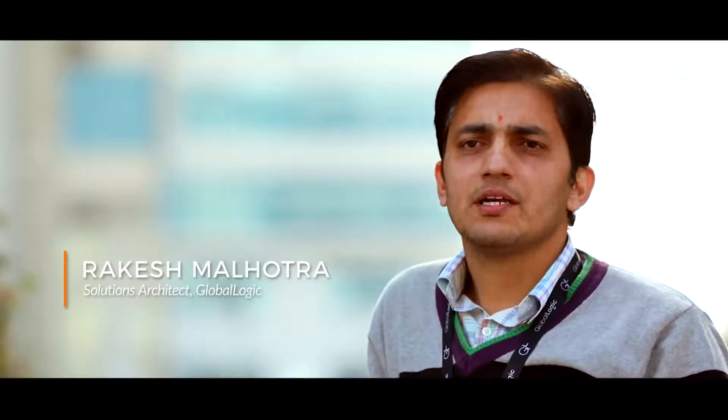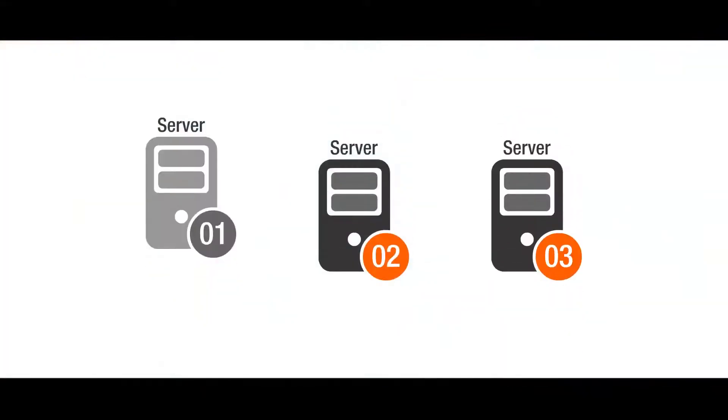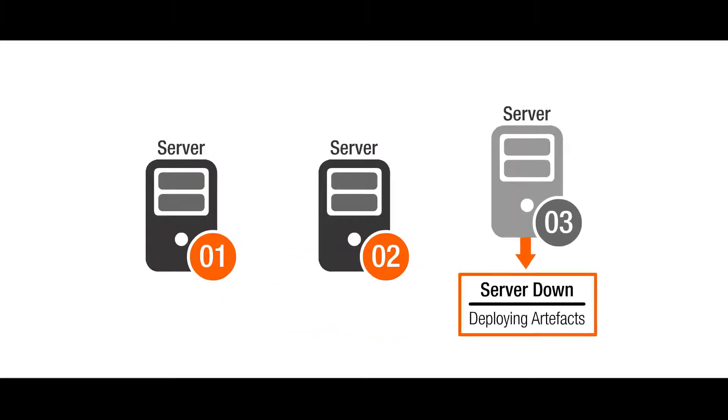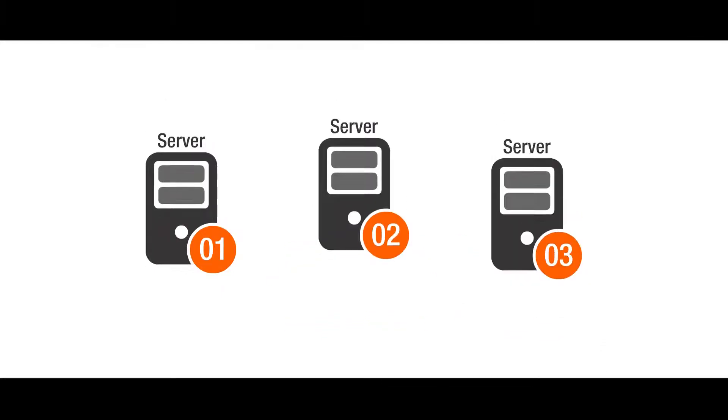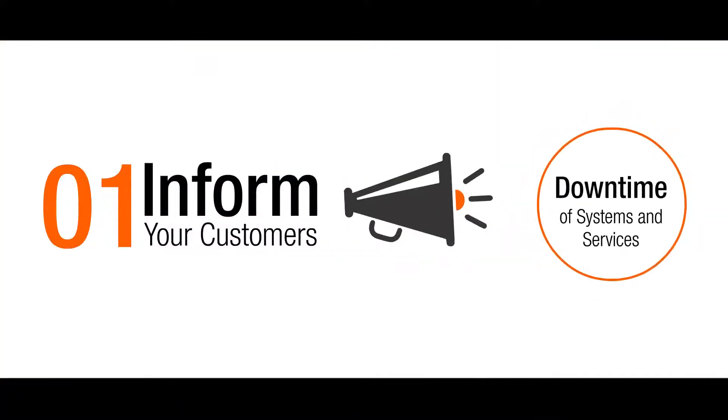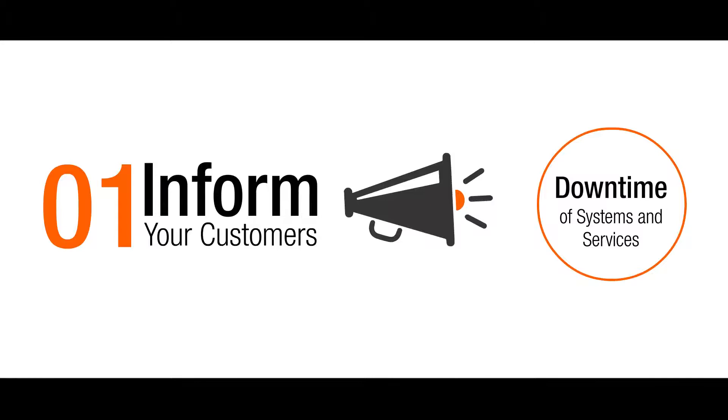The most important thing to be watchful of during deployment is that at one stage your servers will go down, so that the new artifacts and new components can be deployed appropriately on different servers. To avoid that downtime as much as possible, the first approach is to inform your customers proactively about the downtime — that the services and functionalities will not be available for that specified period of time.